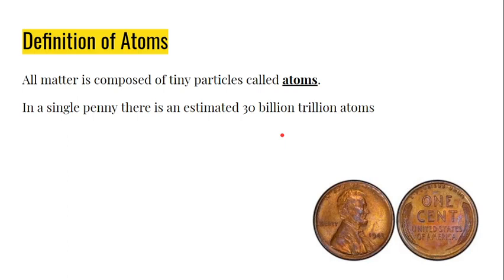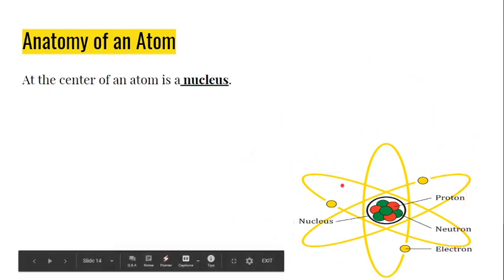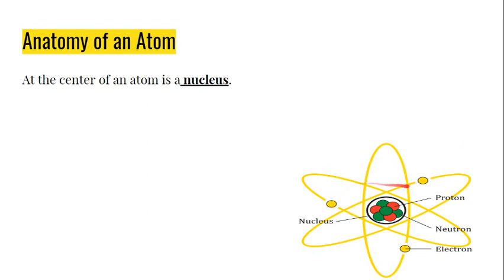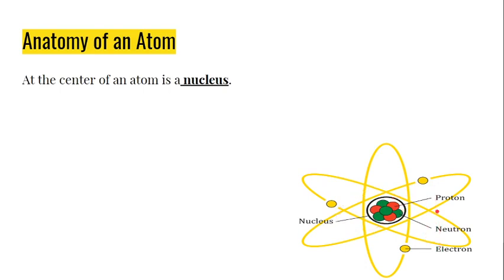The tininess of atoms is one of the most interesting things, but it also makes them very hard to study. However, due to a lot of different scientific discoveries, we can study atoms and we know that atoms exist. And if you could believe it, there's actually something smaller than an atom. Right now we're going to look at the anatomy of an atom — what does an atom look like? The first thing here is that the center of an atom is a nucleus. This is a model of what we believe an atom looks like, and this portion right here that I'm circling my cursor around is the nucleus. You can see it is made up of two other smaller particles that we're going to get into.